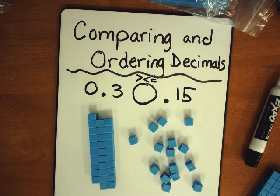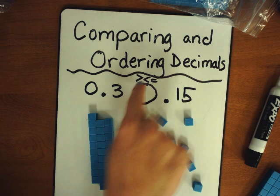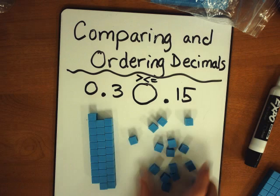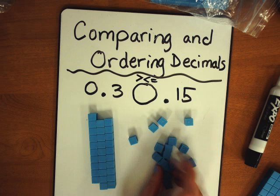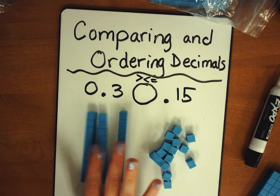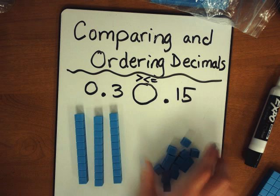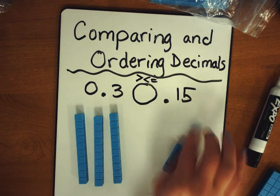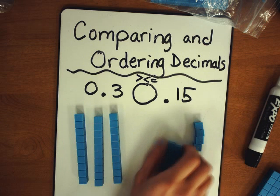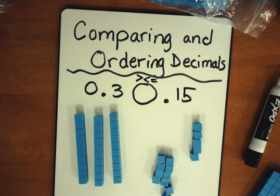So go ahead in your notebook, write down three tenths, put a circle for our greater than, less than, or equal to, and then our fifteen hundredths decimal. Then right underneath there, draw three longs for your three tenths. There are two different ways that you could draw fifteen hundredths — you could do fifteen cubes or little hundredth marks.